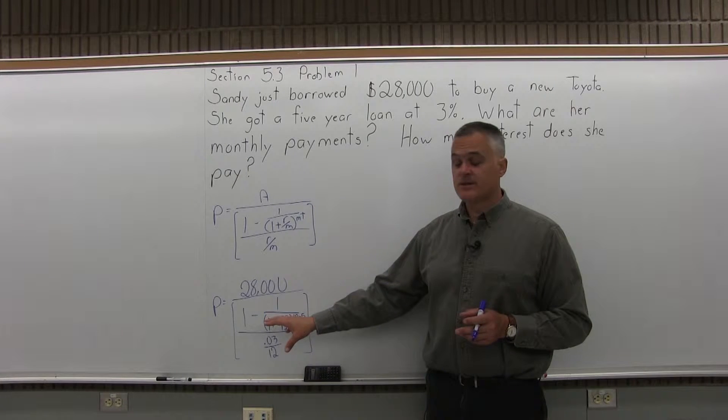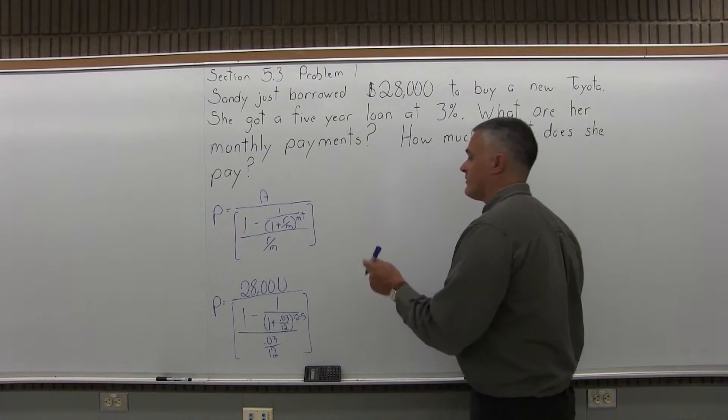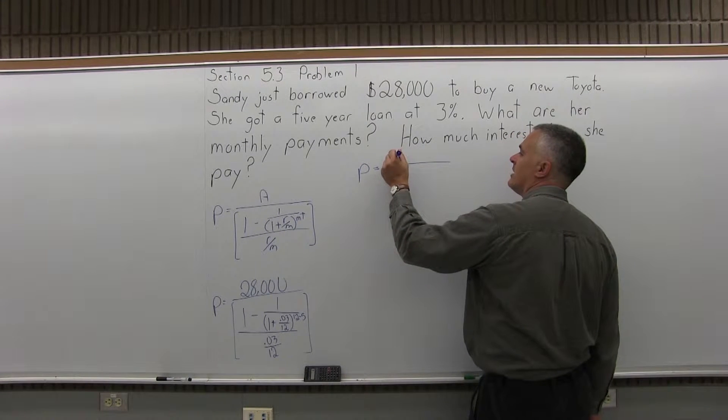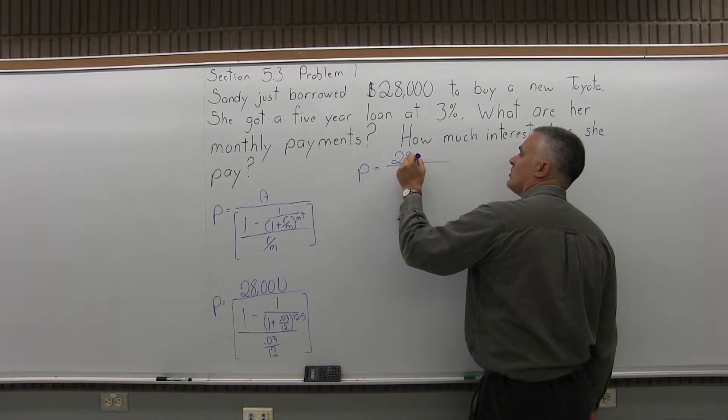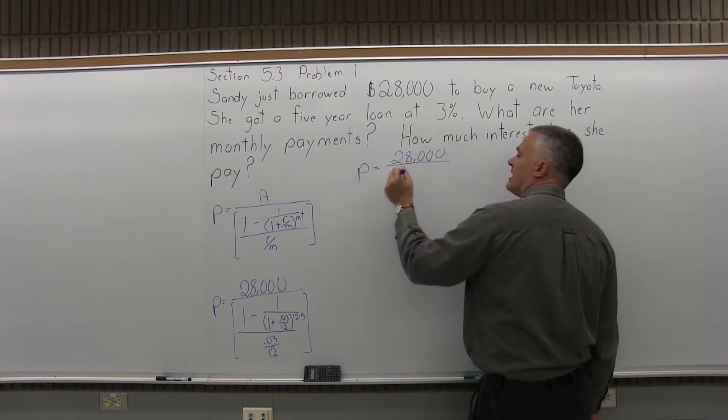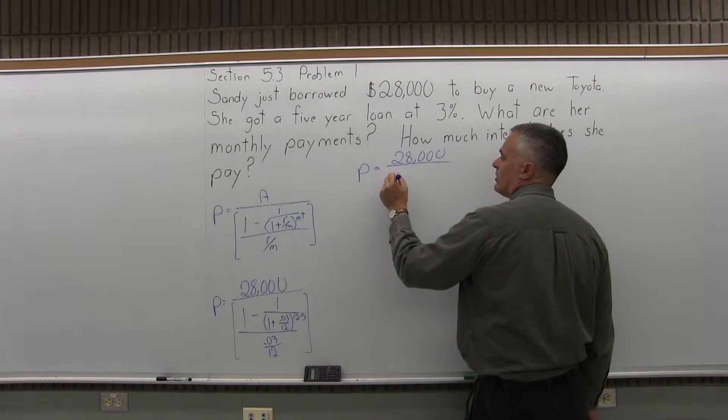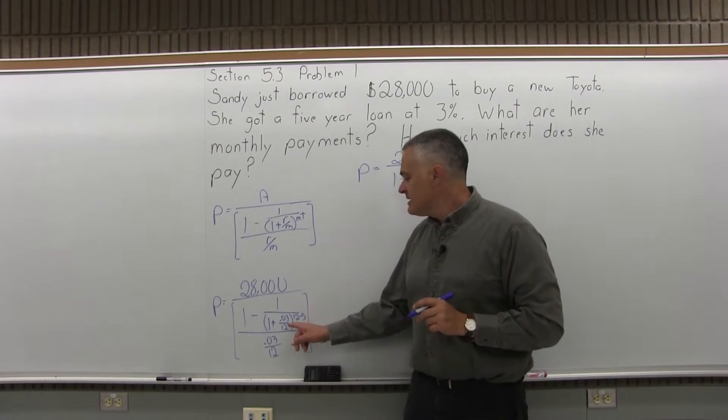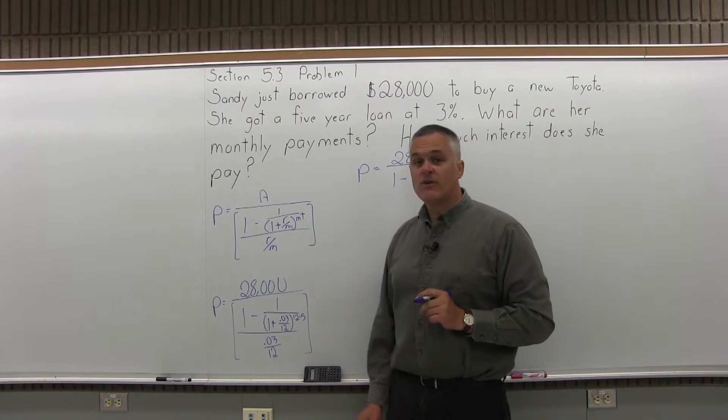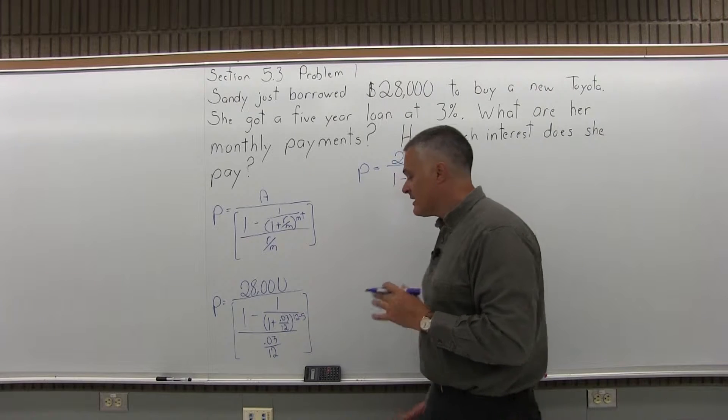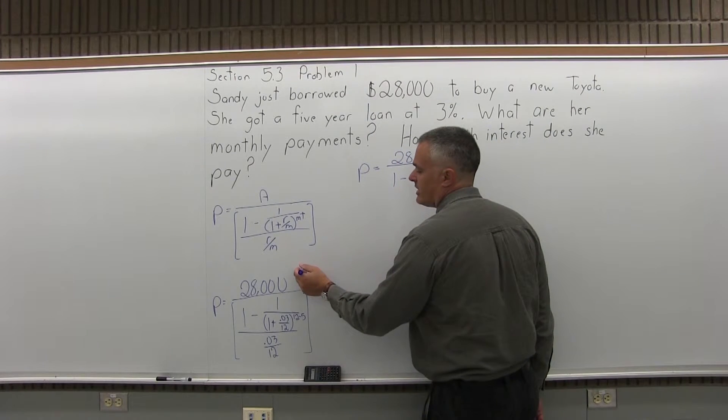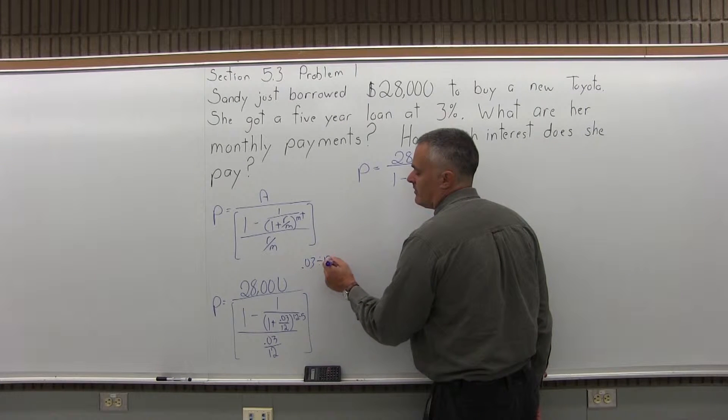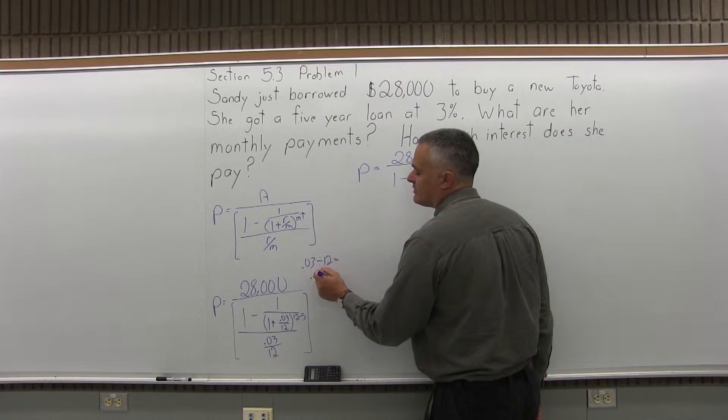As usual where we have parentheses you need to do the work in parentheses first. So we'll have P equals 28,000 over those big brackets. Now in the brackets I'm going to have in the numerator 1 minus 1 over. Now in those parentheses the .03 divided by 12 is .0025 and a calculator can tell you that pretty quickly, .03 divided by 12 will be equal to .0025.